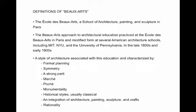This style of architecture is characterized by formal planning — things like symmetry and a strong parti. Parti is the underlying organizational diagram. Marché is the progress from the sidewalk through the entrance into the interior of the building. Think of the Metropolitan Museum: you have the sidewalks, then the big steps, then you pass between the columns, through a double door, into a foyer, and then you're in the lobby.